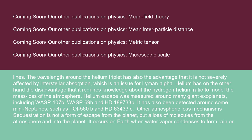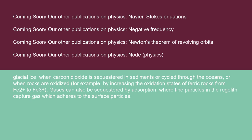Sequestration is not a form of escape from the planet, but a loss of molecules from the atmosphere and into the planet. It occurs on Earth when water vapor condenses to form rain or glacial ice, when carbon dioxide is sequestered in sediments or cycled through the oceans, or when rocks are oxidized — for example, by increasing the oxidation states of ferric rocks from Fe²⁺ to Fe³⁺. Gases can also be sequestered by adsorption, where fine particles in the regolith capture gas, which adheres to the surface particles.